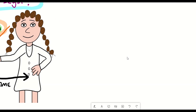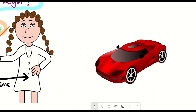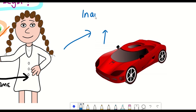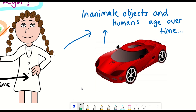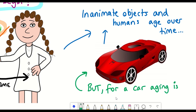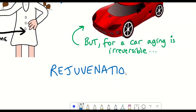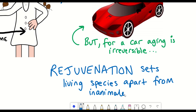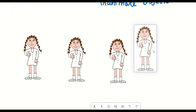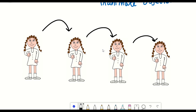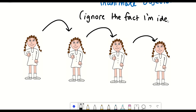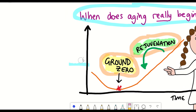I'll start with a question: what do you have in common with a car? Cars and other inanimate objects age over time like we do. However, for cars this ageing is irreversible, whilst rejuvenation is a process that can distinguish living organisms from inanimate objects, enabling life to continually renew itself with each generation. One way to define rejuvenation is as an ability to lower the biological age.